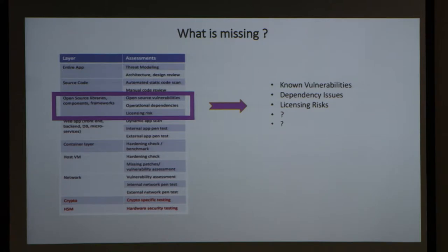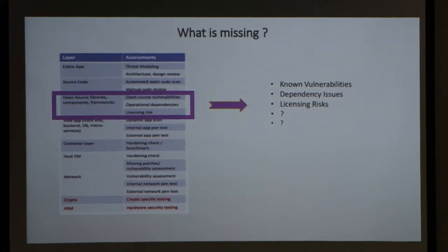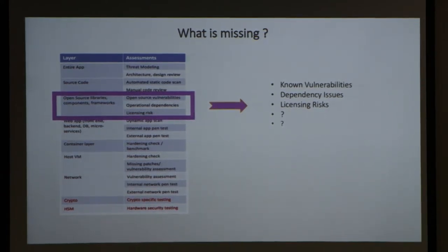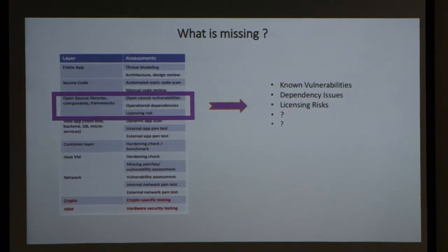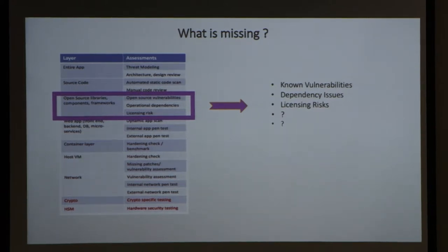Today's talk focuses on the library layer — open source libraries, components, and frameworks. Besides looking at known open source vulnerabilities, operational dependencies, and licensing risk, what is missing? One thing is manual code review of the libraries themselves, and static analysis as well.